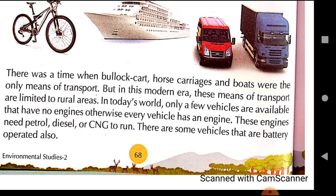Now these bullock carts and horse carriages are limited to very remote rural areas. In today's world, only a few vehicles are available that have no engine — like bicycle or rickshaw. These engines need petrol, diesel or CNG to run. CNG is compressed natural gas. CNG vehicles do not cause pollution, so in metropolitan cities like Delhi, almost all buses and auto rickshaws run on CNG only.